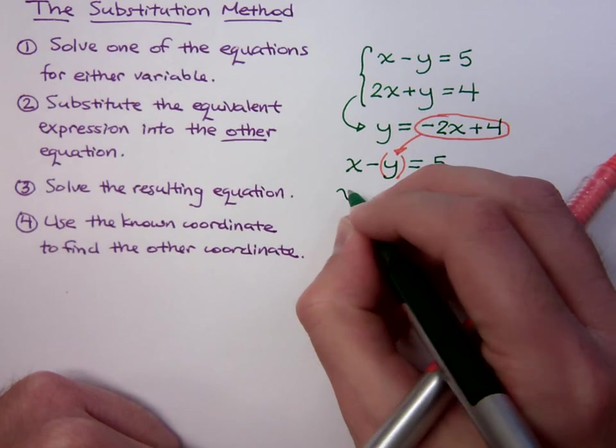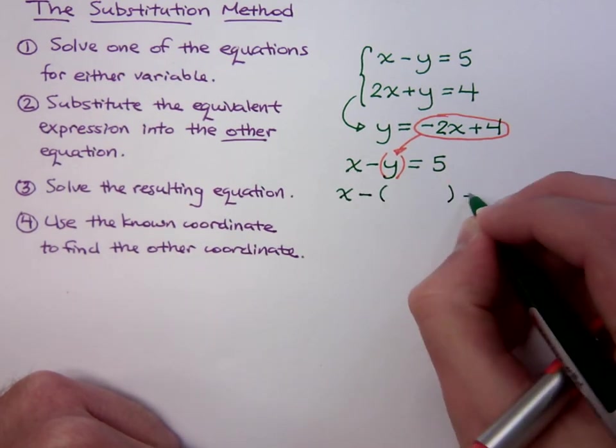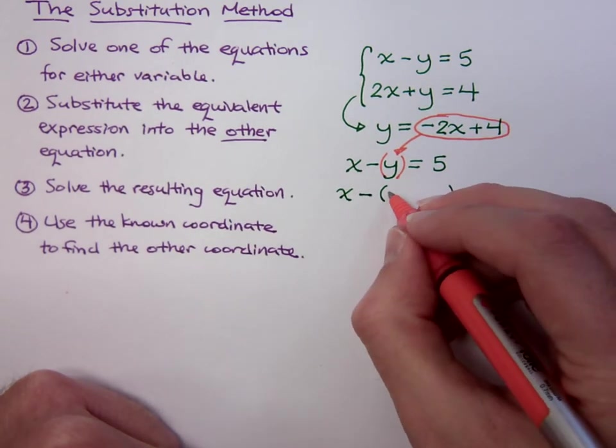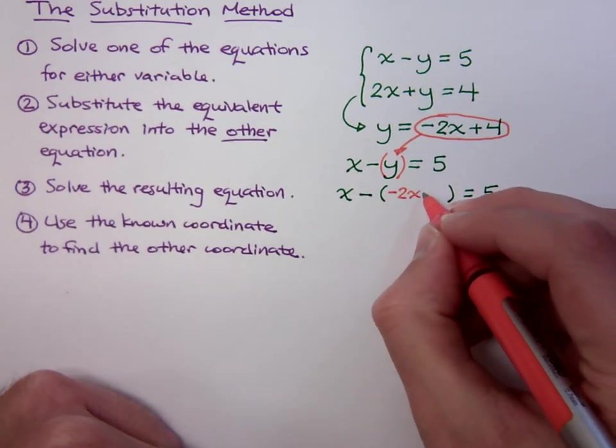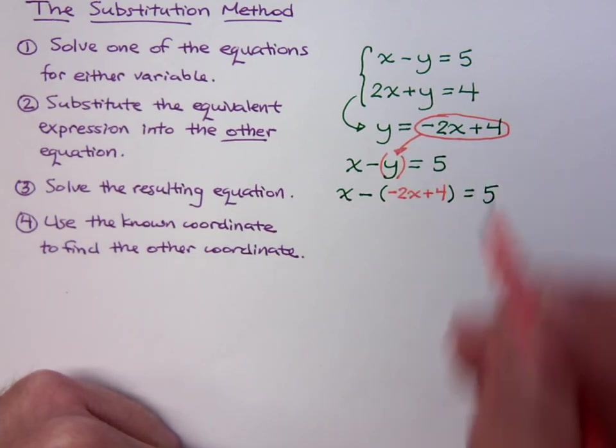So I'm going to have this guy, x minus the y gets replaced with negative 2x plus 4, because in this problem we show that y is the same as negative 2x plus 4.